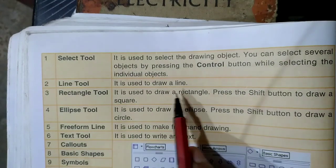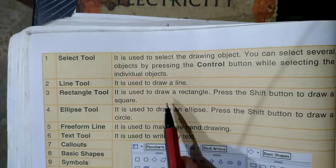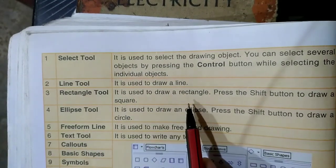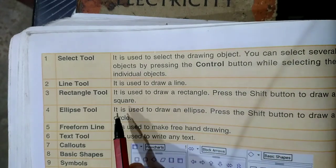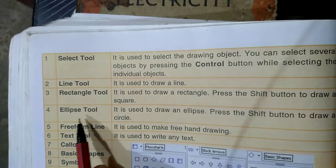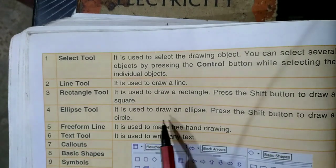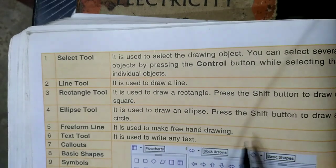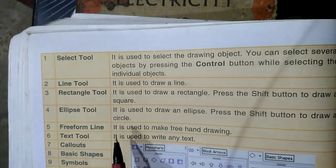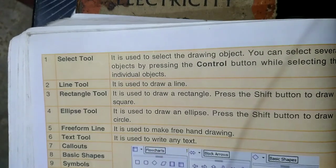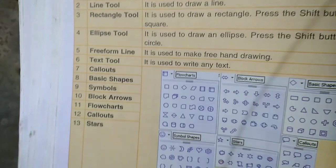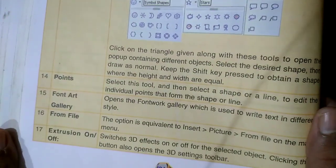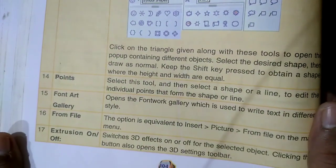Line tool: it is used to draw a line. Rectangle tool: it is used to draw a rectangle — press the Shift button to draw a square. Ellipse tool: it is used to draw an ellipse — press the Shift button to draw a circle. So many things are given here; you may read and understand.